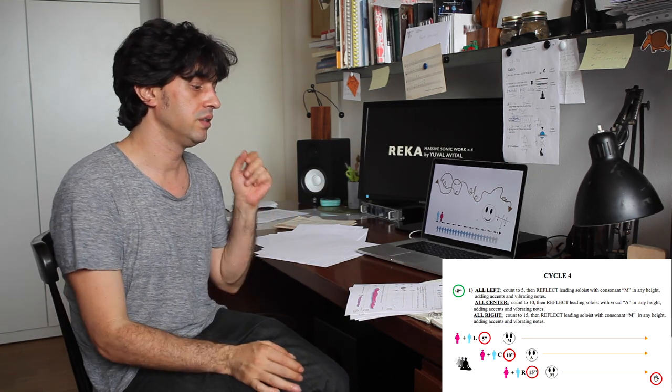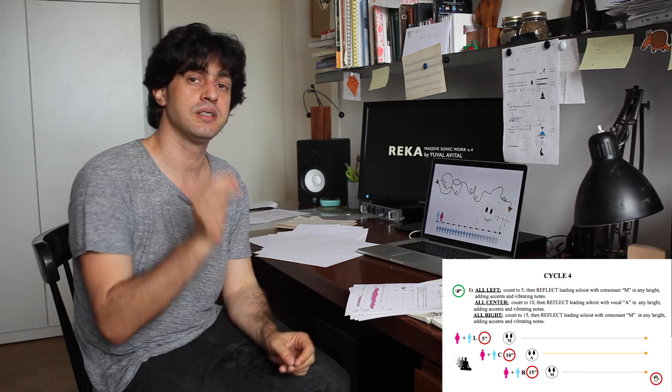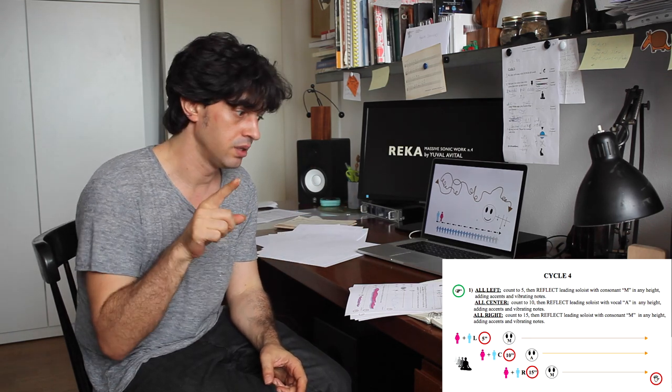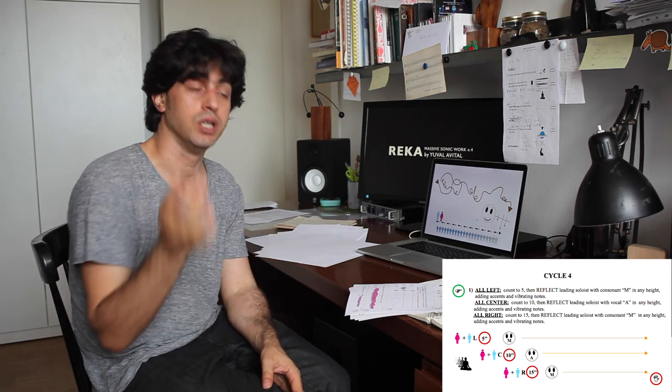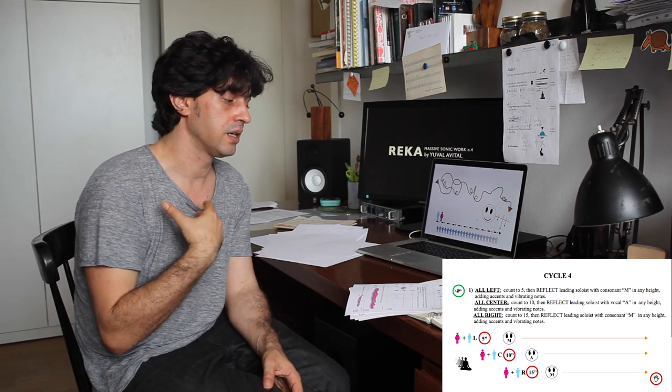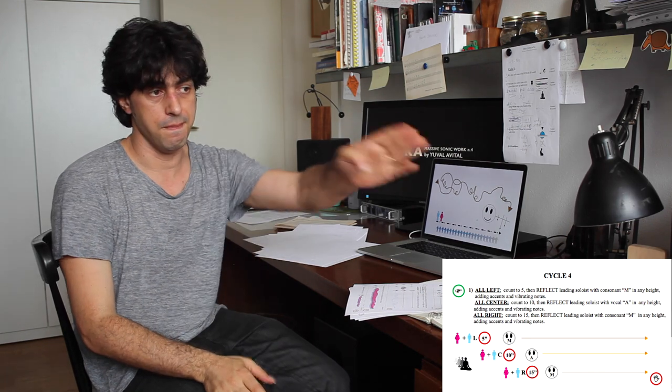And here what happens is that it's a gradual thing, that the left count until five and reflects soloing with the M, and then the center count until ten and do A, and the right count until fifteen and do M again, so you have Mam.